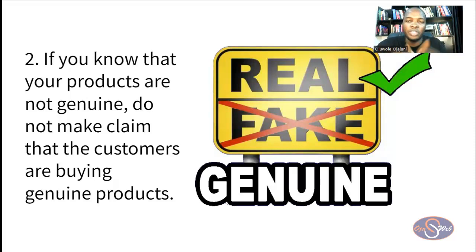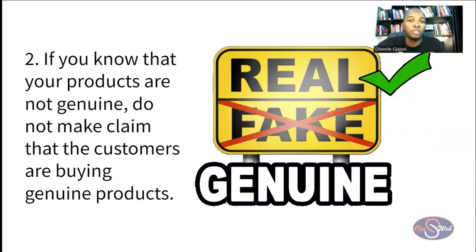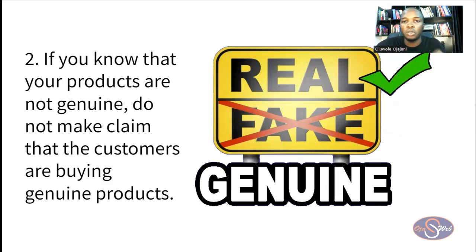The second recommendation is: if what you are selling is not genuine, do not claim it is. Many people sell replica products — for example, Adidas sneakers that are replicas — and claim they are 100% genuine. That is very bad and will definitely lead to your account being suspended if Google detects it. If you are selling a replica, make it clear to customers that what you are selling is a replica of the genuine product. And even then, don't violate the trademark policy, as that will also lead to suspension.